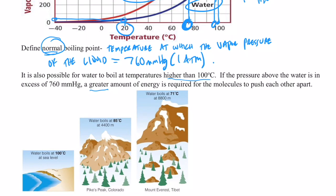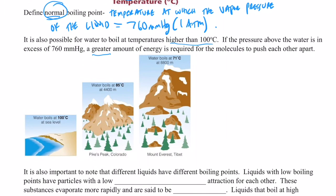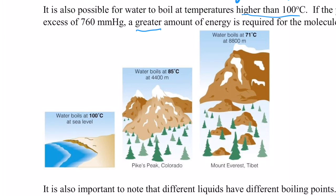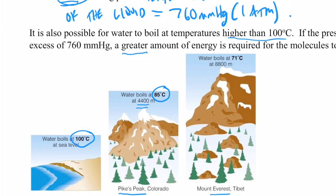At sea level, water boils at about 100°C. On top of Pikes Peak in Colorado, at an elevation of 4,400 meters, water boils at only 85°C. On top of Mount Everest, bubbles begin to form at 71°C — almost 30°C lower than at sea level. As elevation increases, atmospheric pressure decreases, so it's easier for bubbles to form and less energy is required.